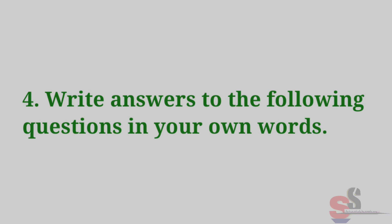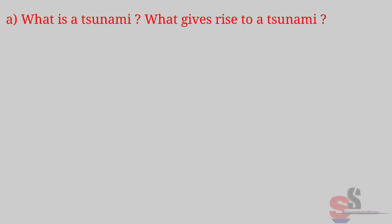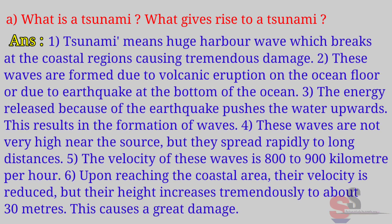Question 4: Write answers to the following questions in your own words. A. What is a tsunami? What gives rise to a tsunami? Answer: A tsunami means huge harbor waves which break at coastal regions causing tremendous damage. These waves are formed due to volcanic eruption on the ocean floor or due to an earthquake at the bottom of the ocean. The energy released pushes the water upwards, forming waves. These waves are not very high near the source but spread rapidly. Their velocity is 800–900 km per hour. Upon reaching the coastal area, their velocity reduces but height increases tremendously to about 30 meters, causing great damage.